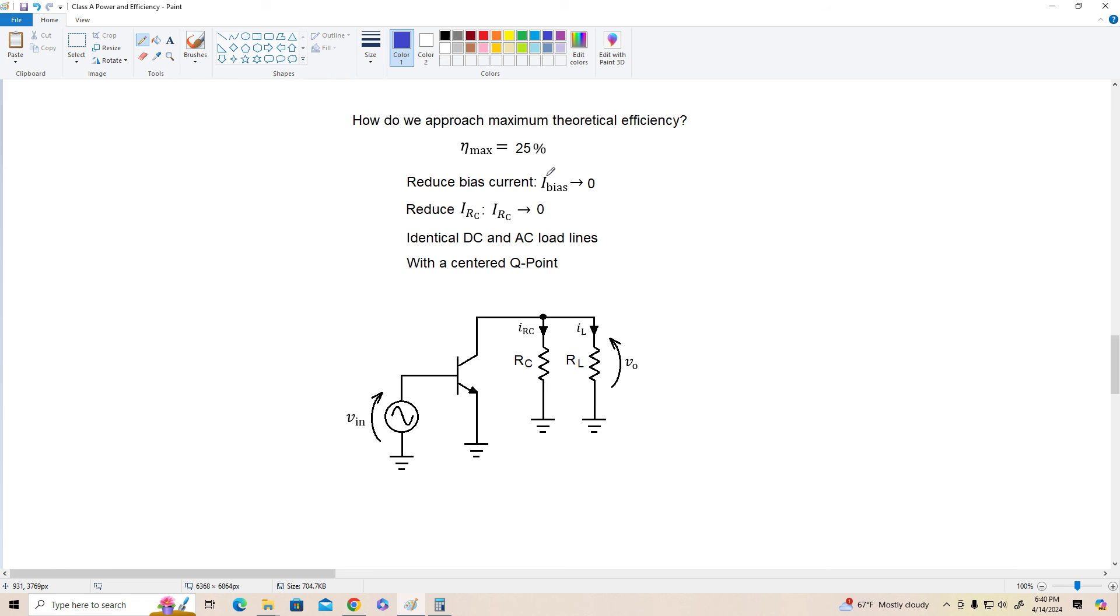Now there are other coupling arrangements that we can use, for example there's transformer coupling. That's not used very often with transistors but it is used a lot with vacuum tube amplifiers, and if we were to use transformer coupling we could get a maximum theoretical efficiency of 50%. But again that's a topic for another day.